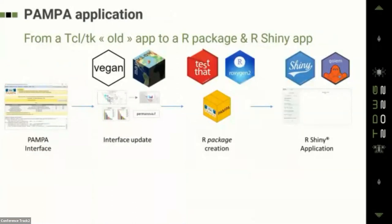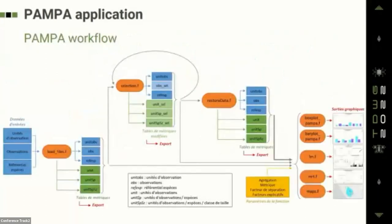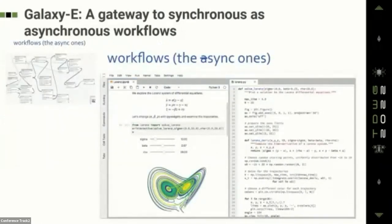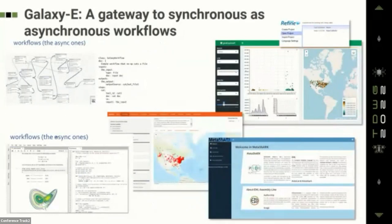Then, switching to another interactive app called PAMPA — coming from a Tcl/Tk old app, creating an R package and R Shiny application — to help managers of protected areas generate by themselves indicators and cross metrics directly from raw data. The reason for speaking about these open source R-based interactive solutions is that in Galaxy you can integrate such interactive apps. You can have Jupyter Notebooks deployed on demand inside Galaxy, and you can even mix Jupyter Notebooks, R Shiny apps, and Java tools with classical Galaxy tools.